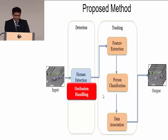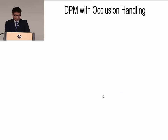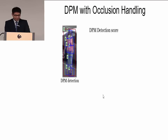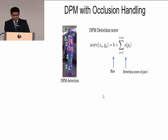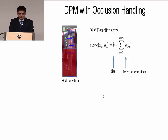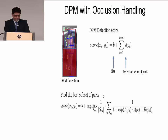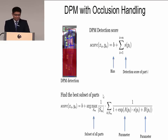To handle occlusion, we propose an occlusion handling method in the detection stage. The DPM detection score sums up all the part scores. If the person is partially occluded, the overall score will be lower than the threshold and it will not be detected. Our method finds the best subset of parts using an equation where S_M is the subset of all parts, and A and B are parameters of a sigmoid fitting function. We search over combinations of all parts to find the subset with the highest average score. Even if the person is partially occluded, we can still detect the subset of the parts.